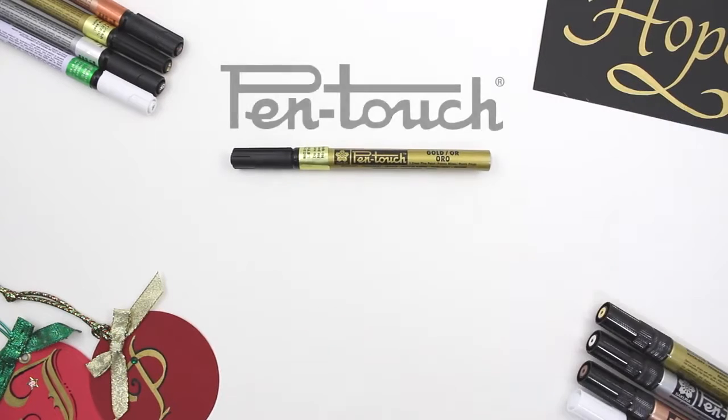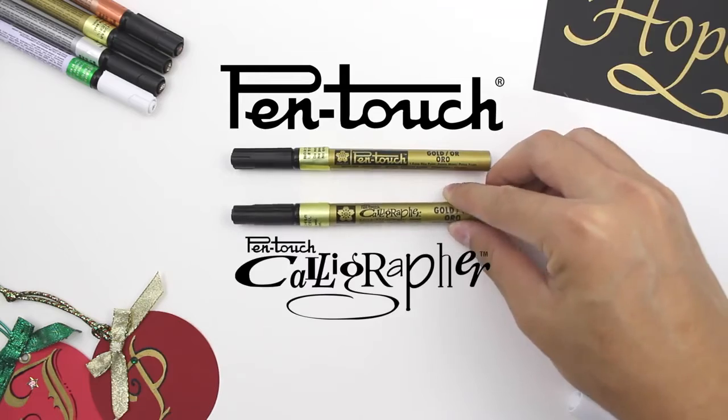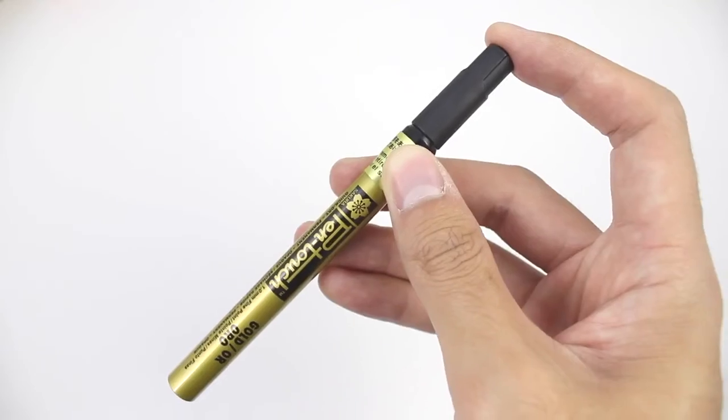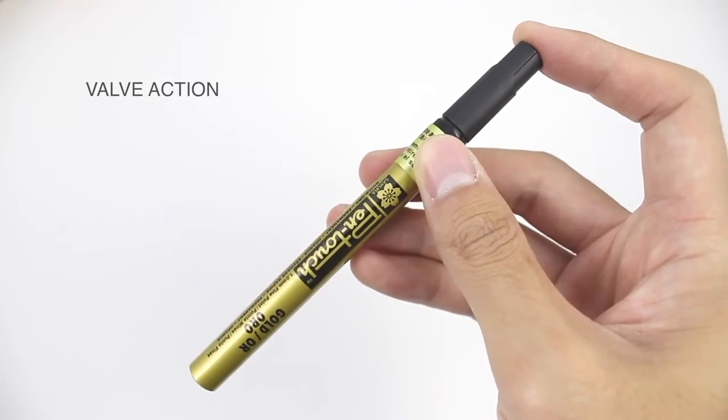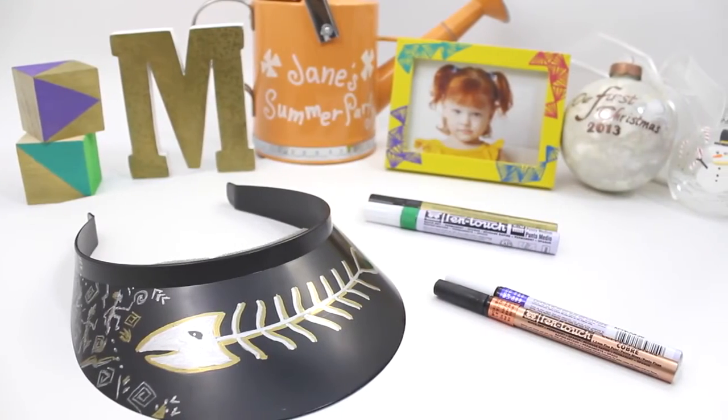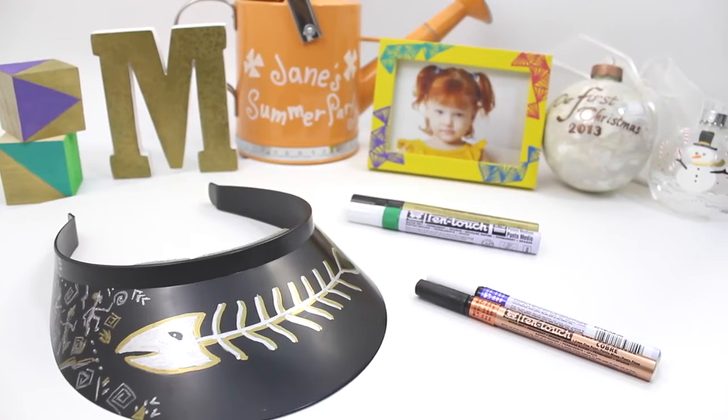Here is what you need to know about Sakura's Pentouch paint markers. Pentouch is a valve-action type marker that can not only write on paper but also on a variety of alternative surfaces like plastic, glass, and metal.